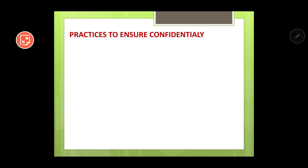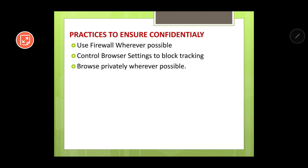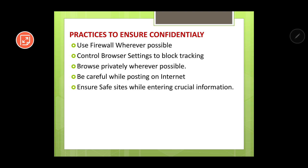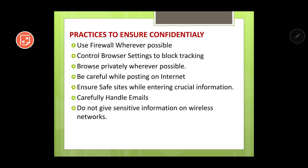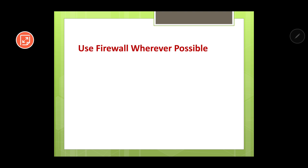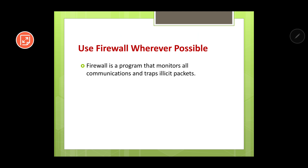There are certain practices which we must keep in mind while being online. These include: use firewall wherever possible; control browser settings to block tracking; browse privately wherever possible; be careful while posting on the internet; ensure safe sites while entering crucial information; carefully handle emails; do not give sensitive information on wireless networks; and avoid using public computers. Now, a firewall is a program that monitors all communications and traps illicit packets.